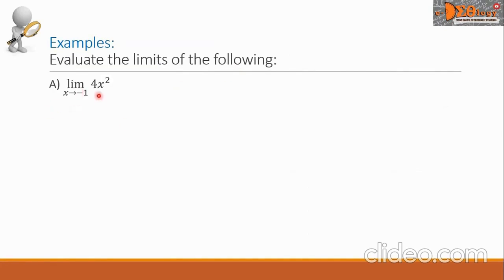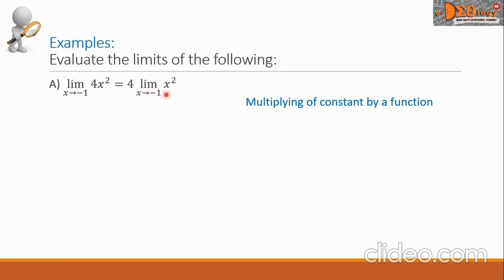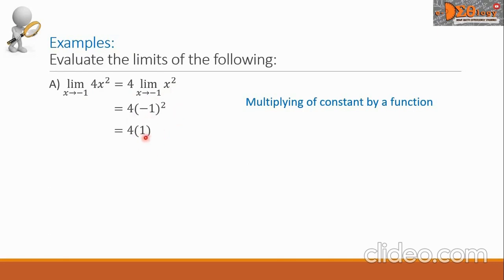Example A: limit of the function 4x squared as x approaches negative one. This is an example of multiplying a constant by a function. We take the limit of x squared as x approaches negative one, then multiply by the constant 4. Substituting negative one: we have negative one squared times 4. The square of negative one is positive one, and one times four is 4. This is our final answer.